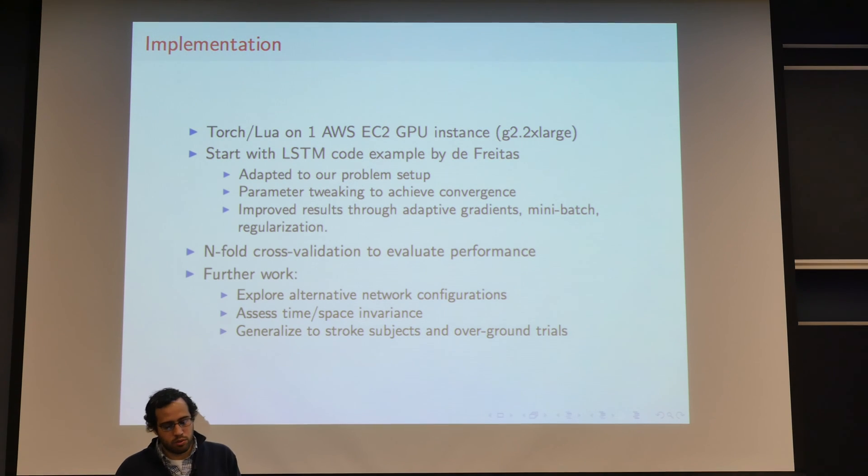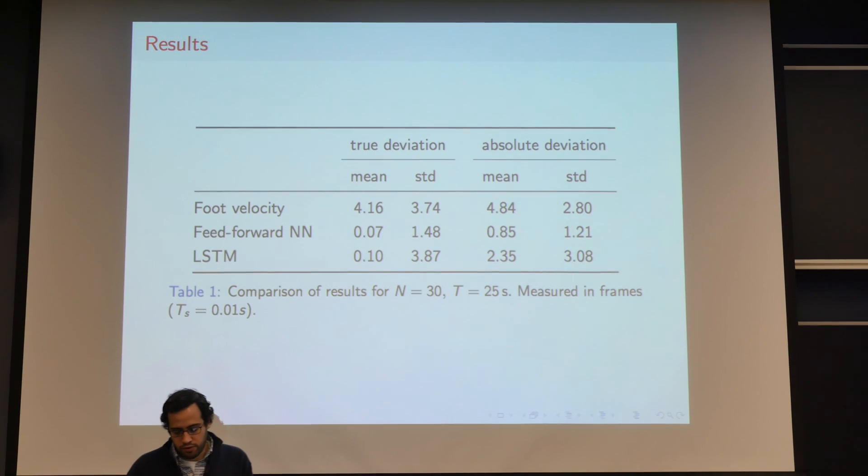And what we ended up doing was taking an existing Torch implementation of LSTM cells that we found by de Freitas. We adapted this to work with our code. It had to tweak some things. This was an example for text. We had to tweak some things to make it converge. In our particular case, we tried to improve some results using adaptive gradients, mini-batch to improve the training time and also the accuracy. And we did n-fold cross-validation. The results I'm presenting here is just for a two-fold case. And we have some further work that we'd like to do from these results.